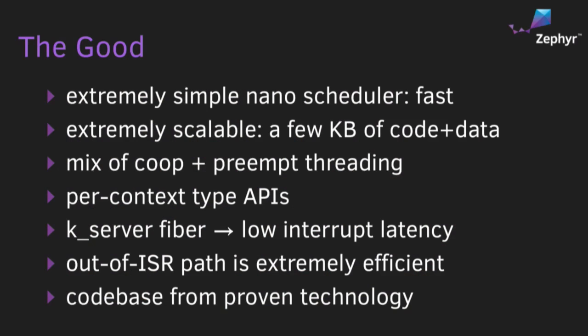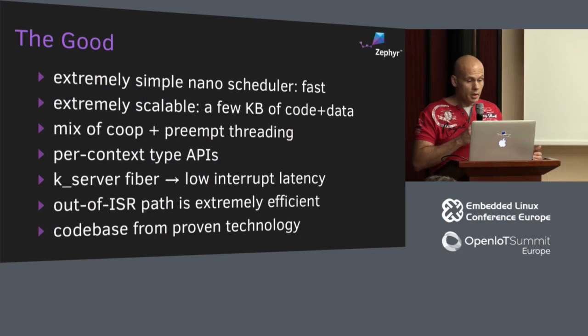That gave us some good things. The nano kernel scheduler is extremely simple, which makes it very fast especially when coming out of an ISR. The nano kernel is also extremely scalable — we can scale the kernel down to maybe two or three kilobytes of code and data. We get a mix of cooperative and preemptible threading: you can use cooperative threading if you want multithreading without worrying about locks, using implicit locking by having threads yield when done with shared data structures.